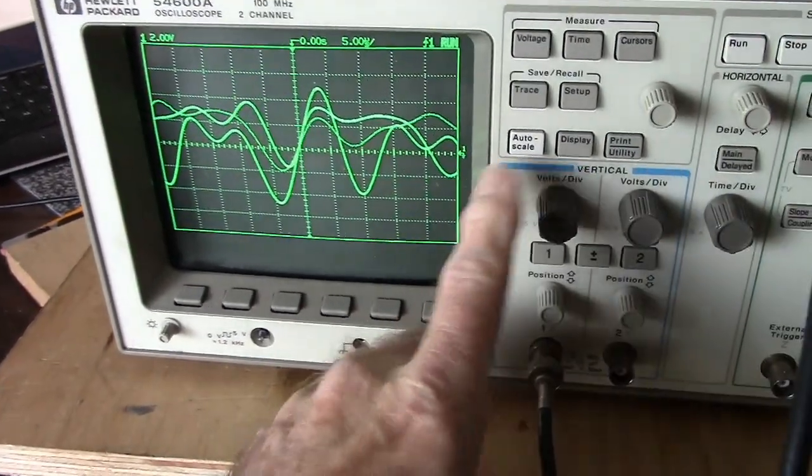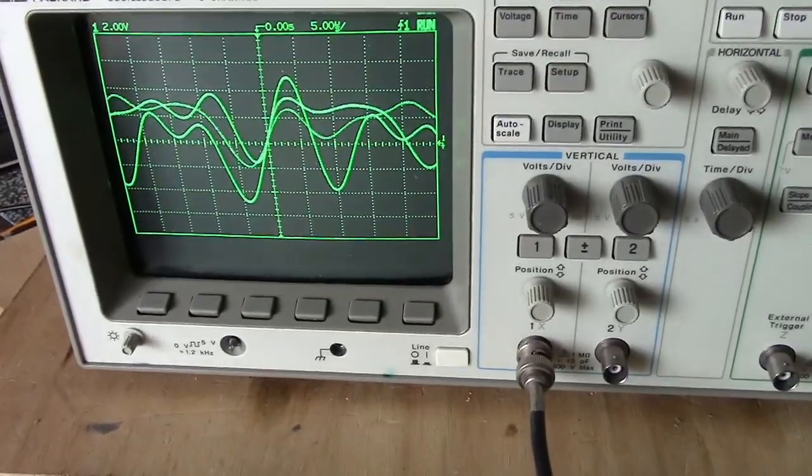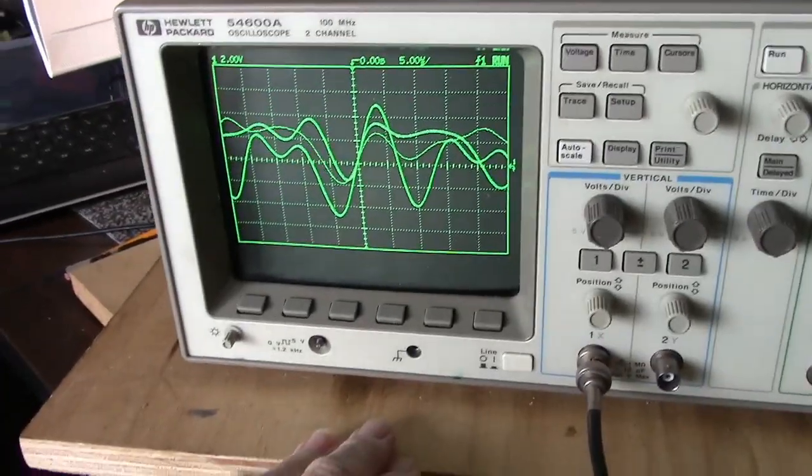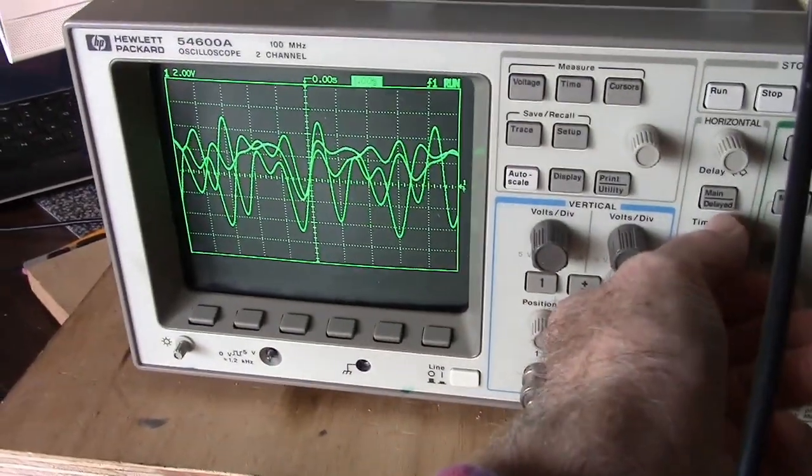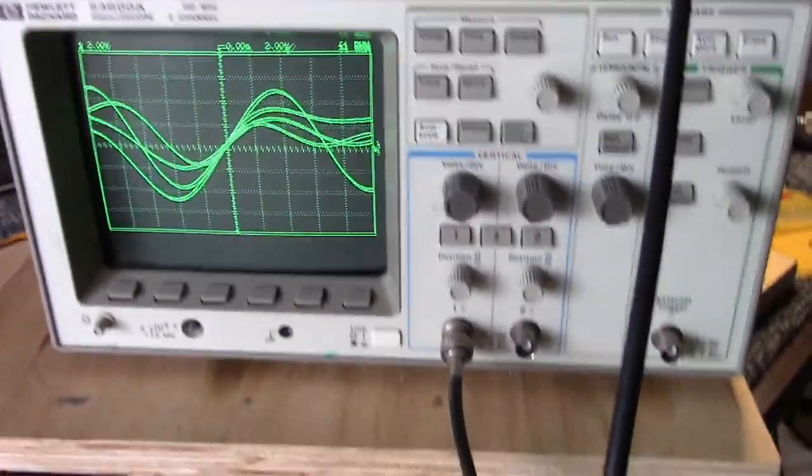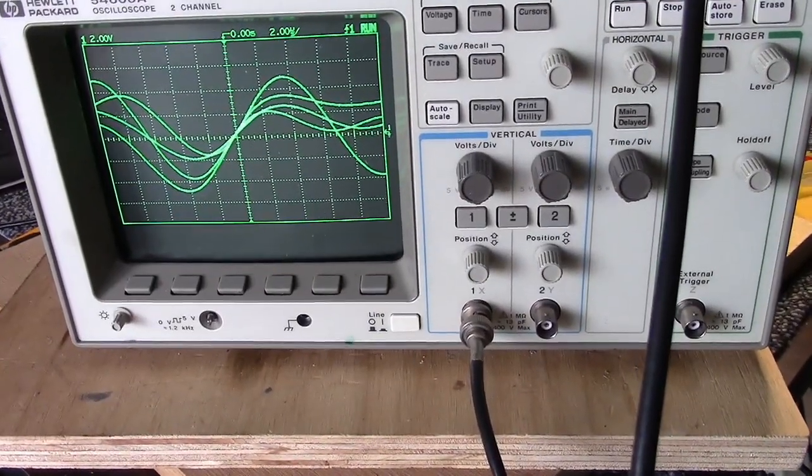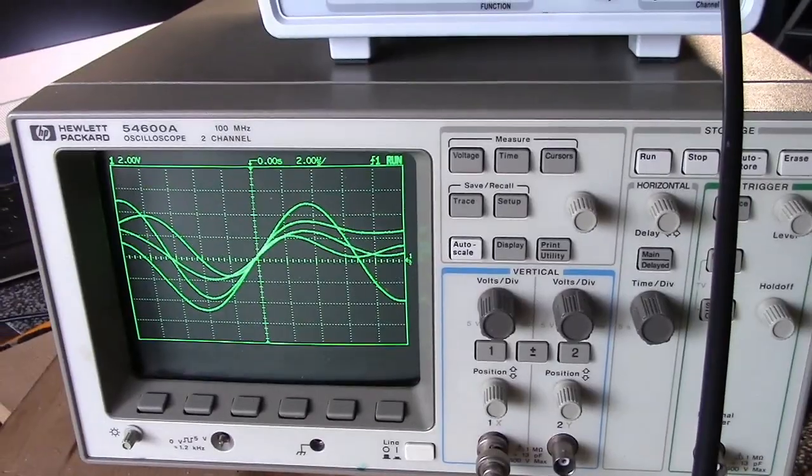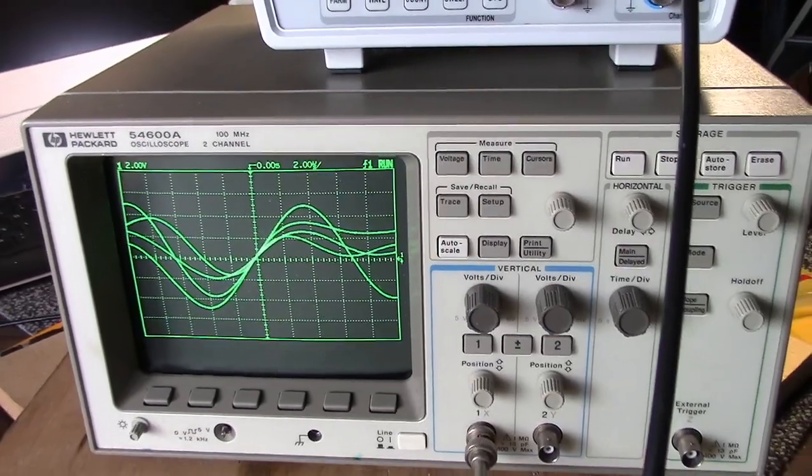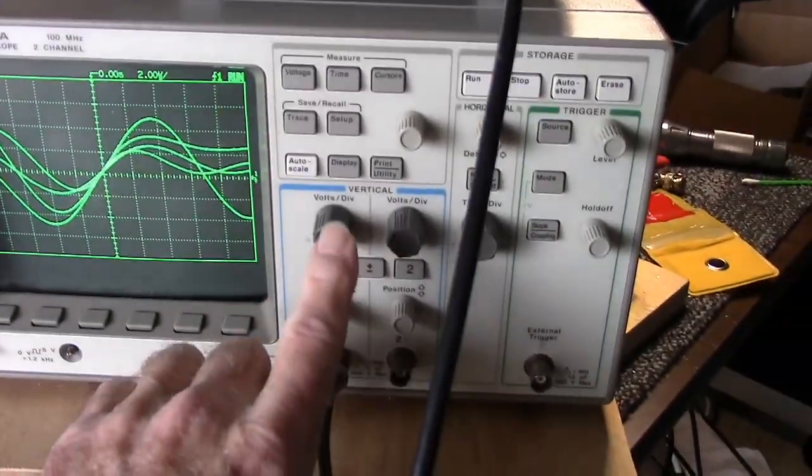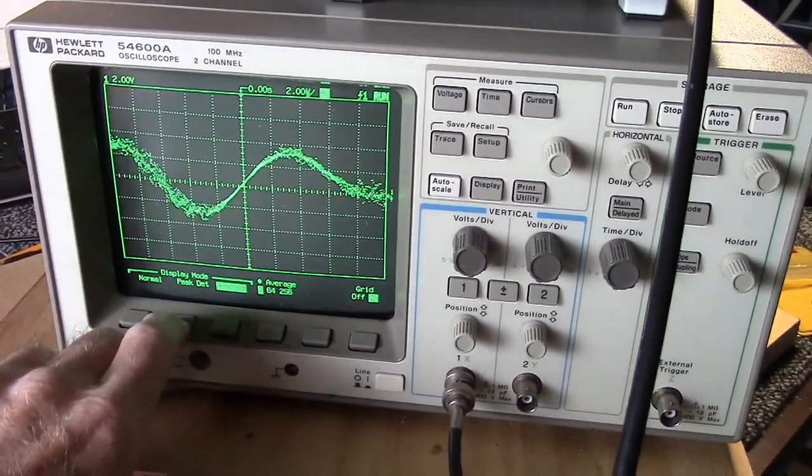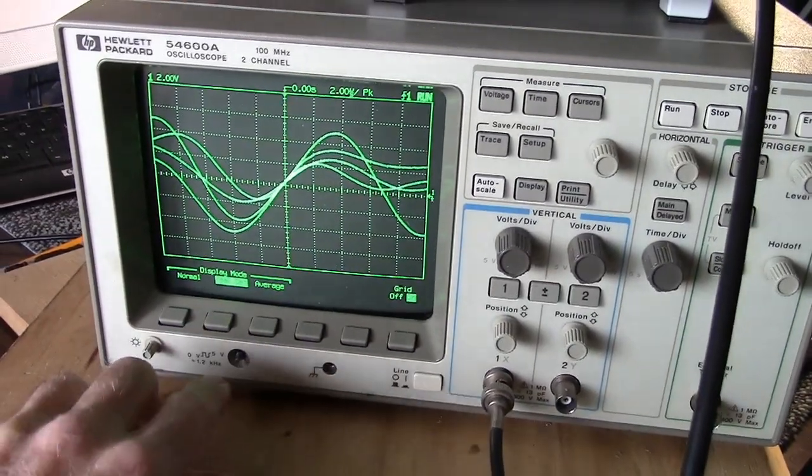One thing I like about these scopes is the auto scale like on the newer ones, but that can kind of make you lazy. It's in the ballpark though. I kind of like this scope. 100 megahertz two channel. It's the HP 54600a, 100 megahertz two channel scope. So let's look at the display. Yeah I had to really push that.